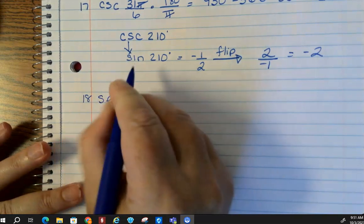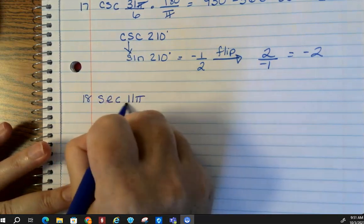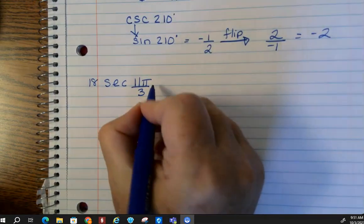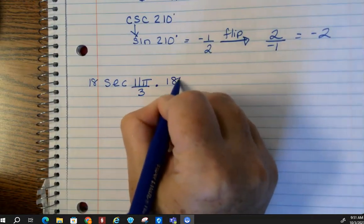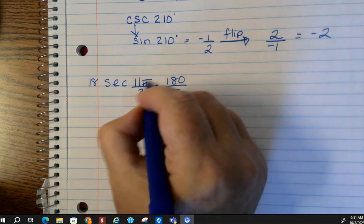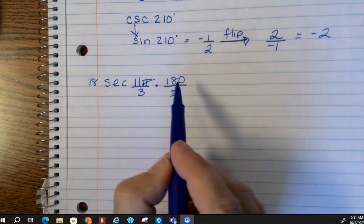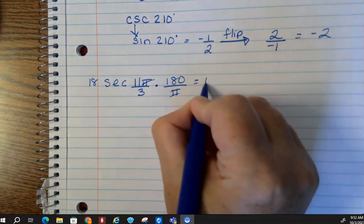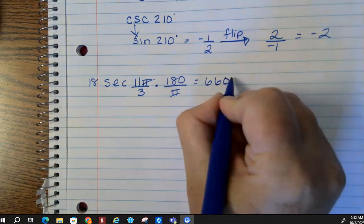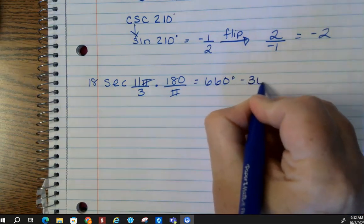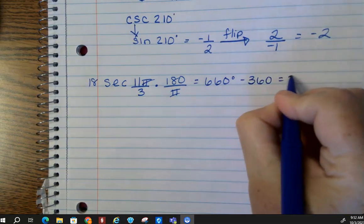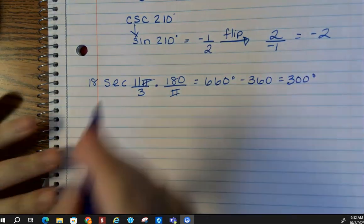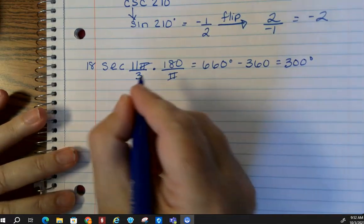So secant of 11 pi over 3, sadly, is not on the unit circle. So we're going to convert, these cancels. So if you multiply across the top, divide by 3, you get 660 degrees. So what we're just going to do here is subtract, and we get 300.